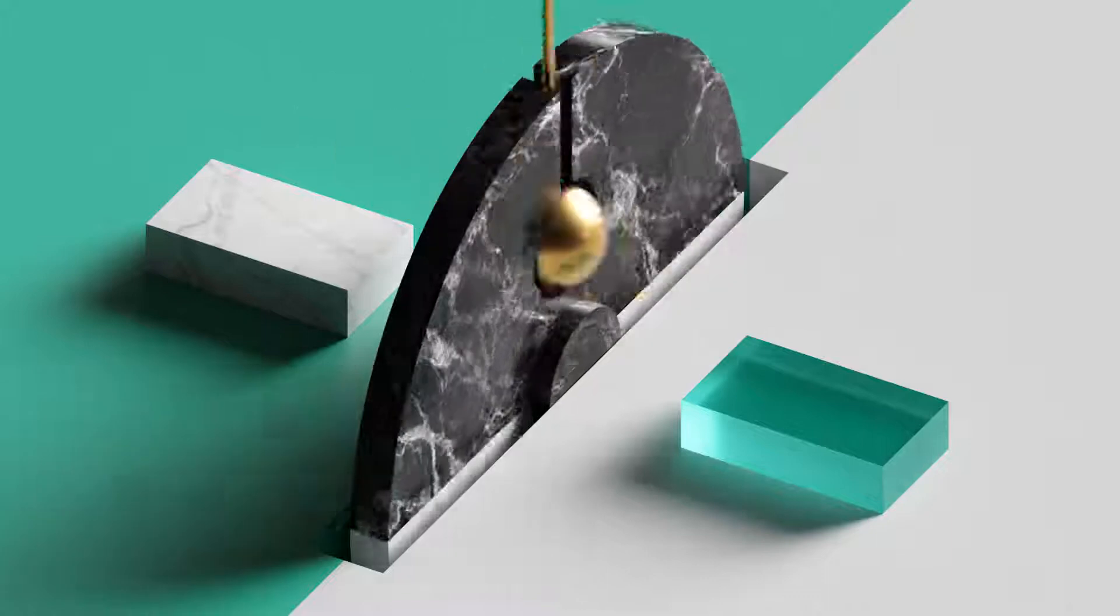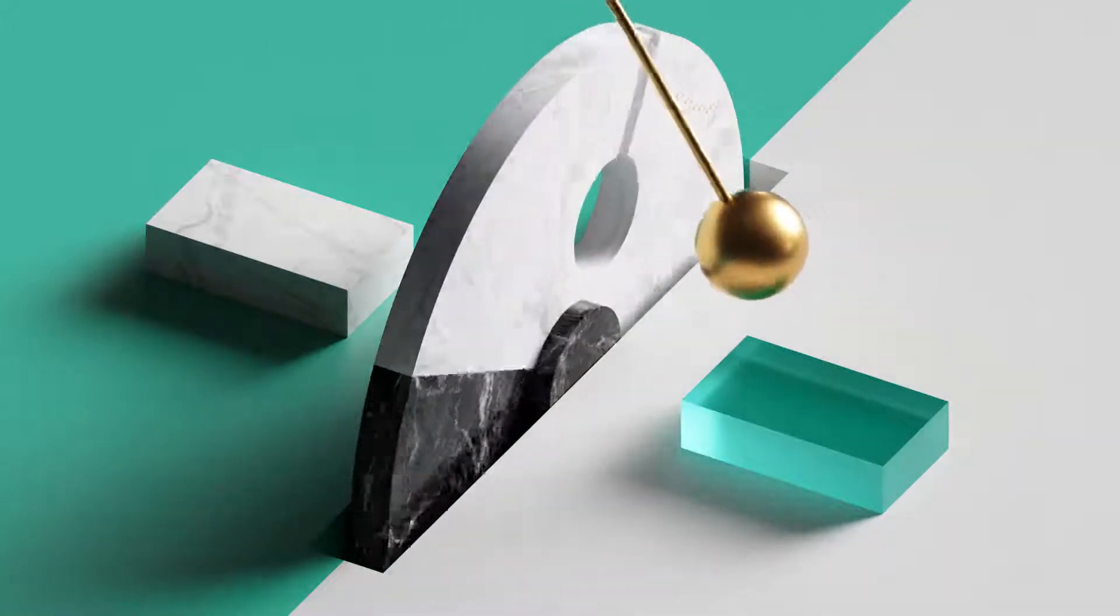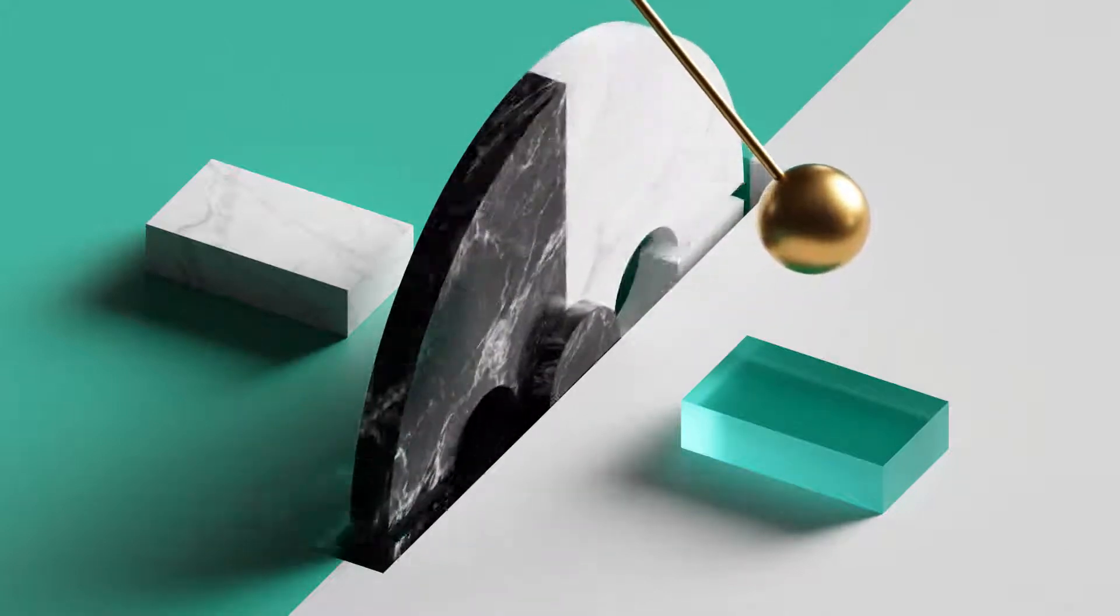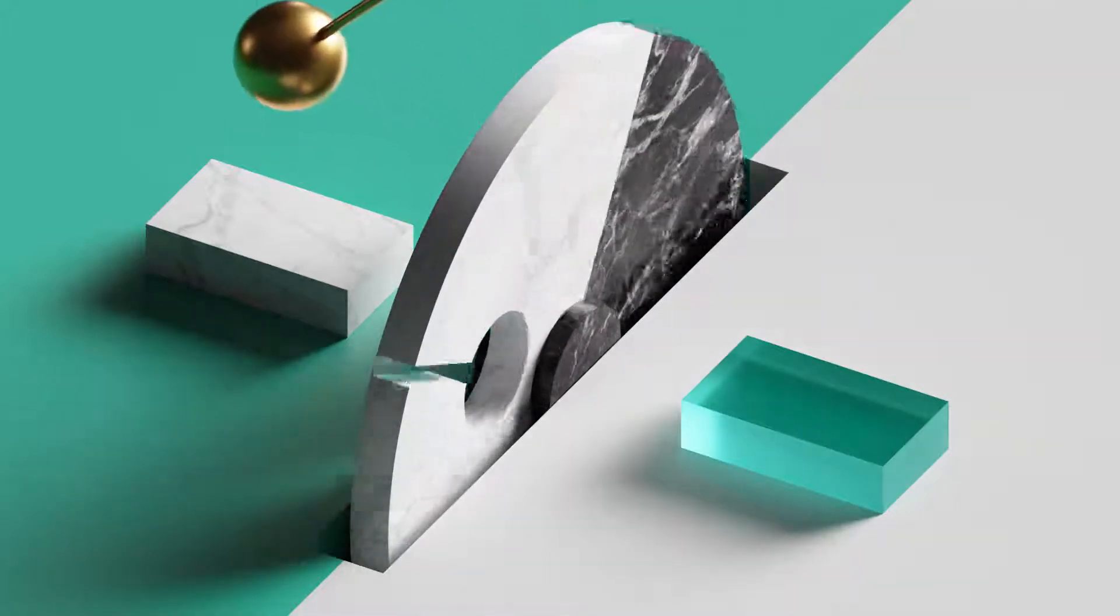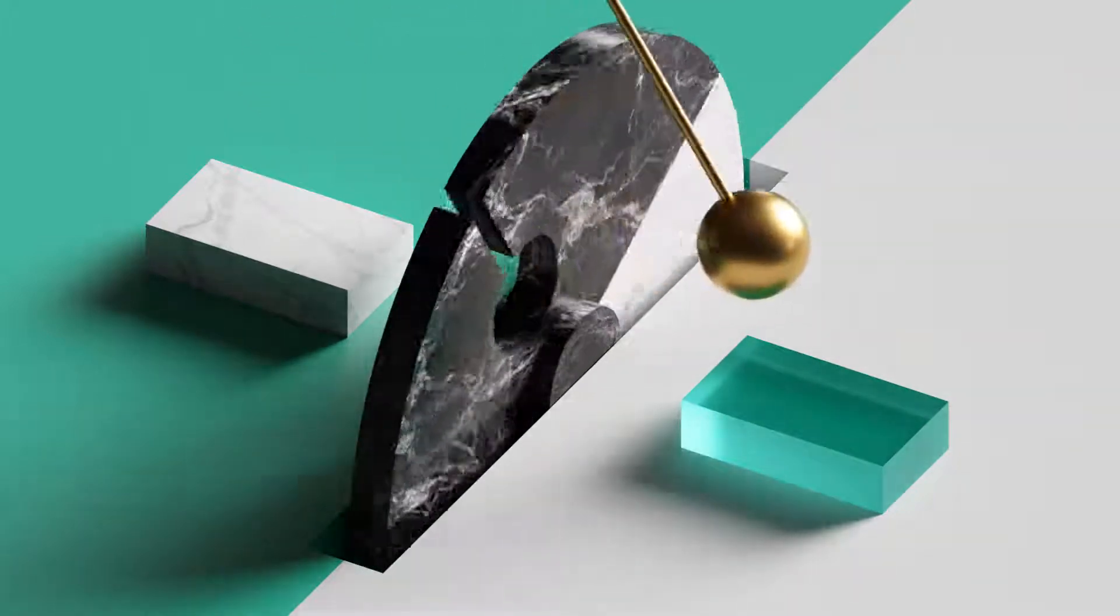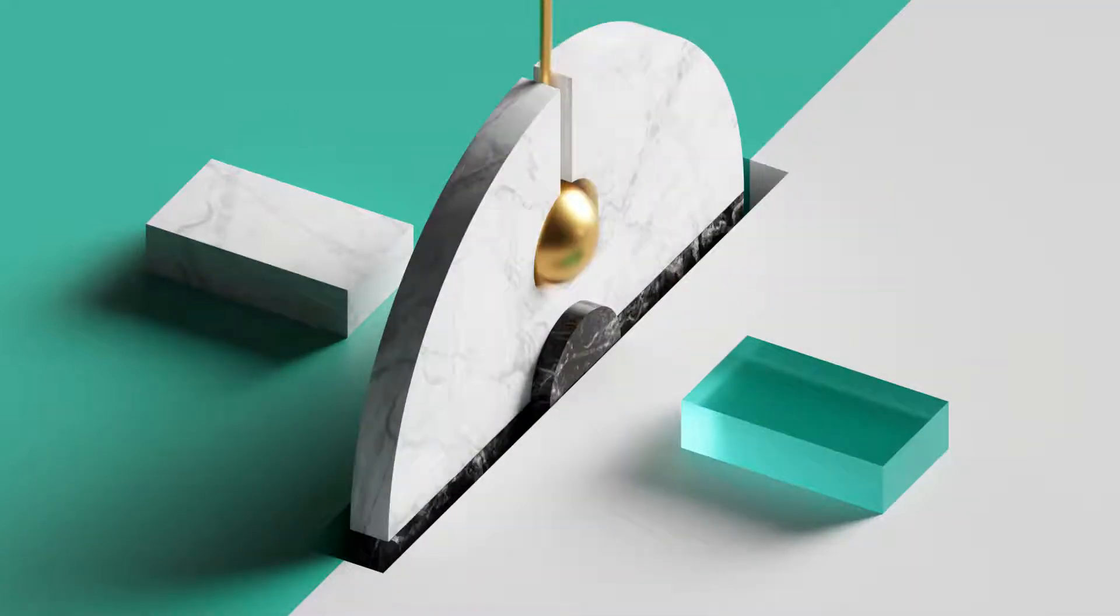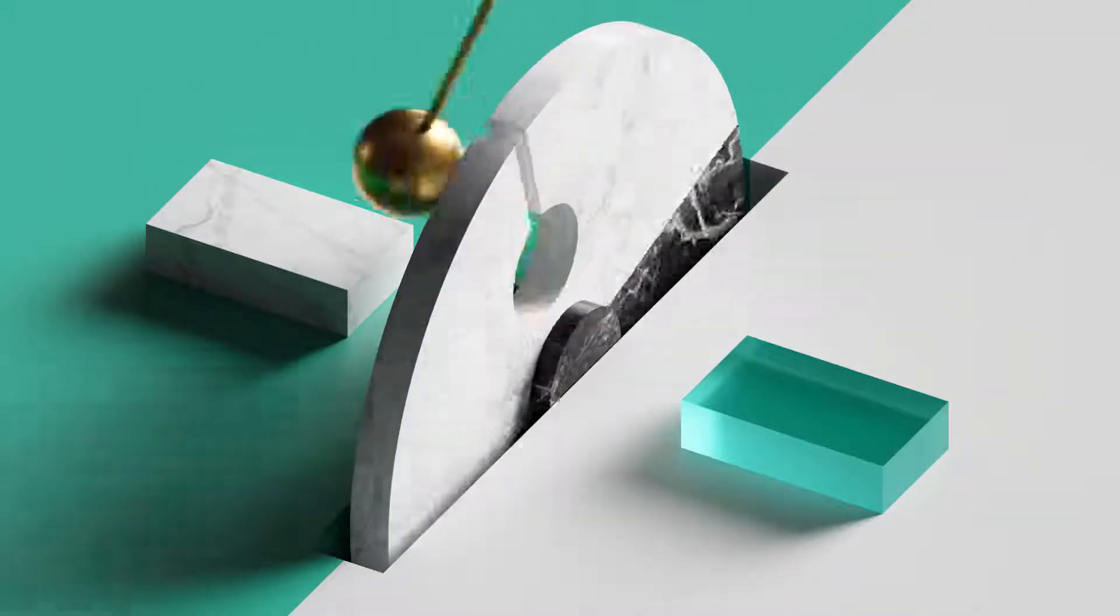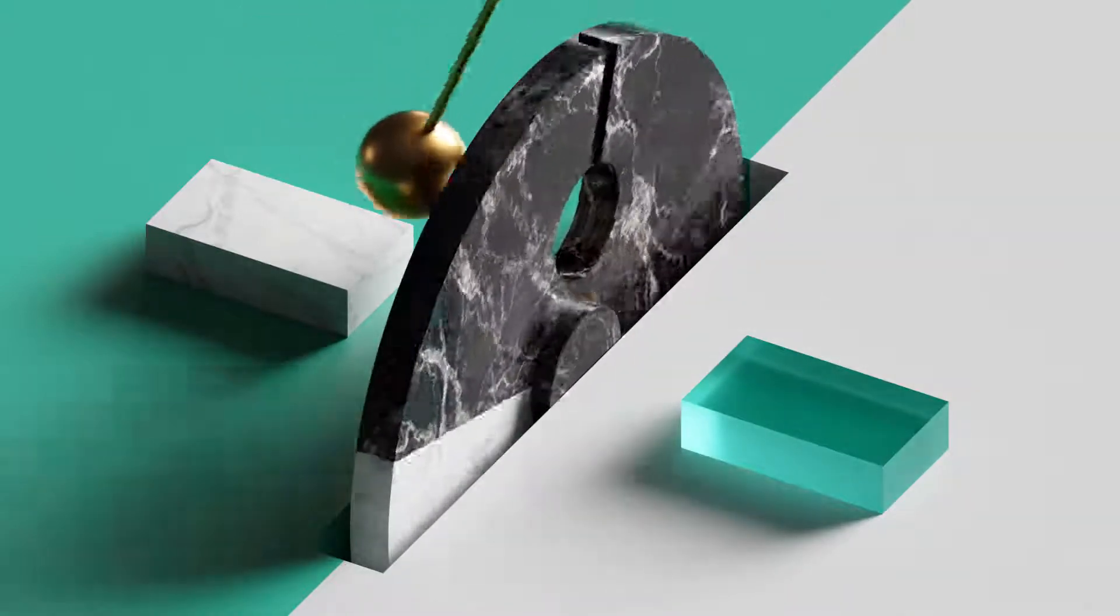After the Israelites left Ramesses, they camped at Succoth, and from there they moved their camp to Etham on the edge of the desert. Then they turned back toward Pi-Hahirath, east of Baal-Ziphon, and camped near Migdal. They left Pi-Hahirath, crossed the Red Sea, then walked three days into the Etham desert and camped at Marah.